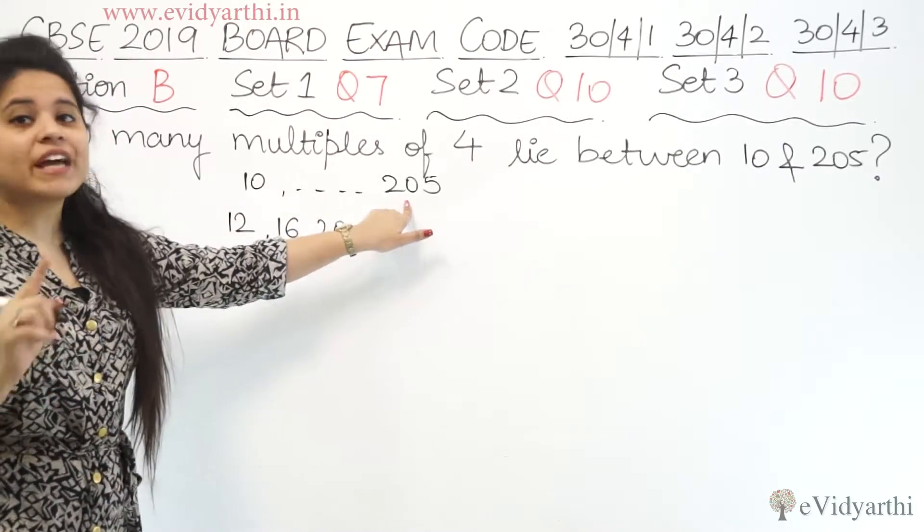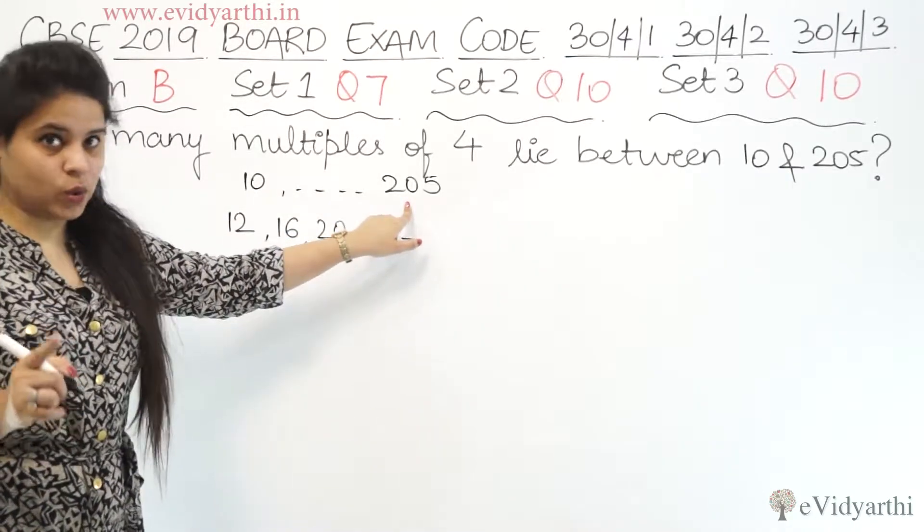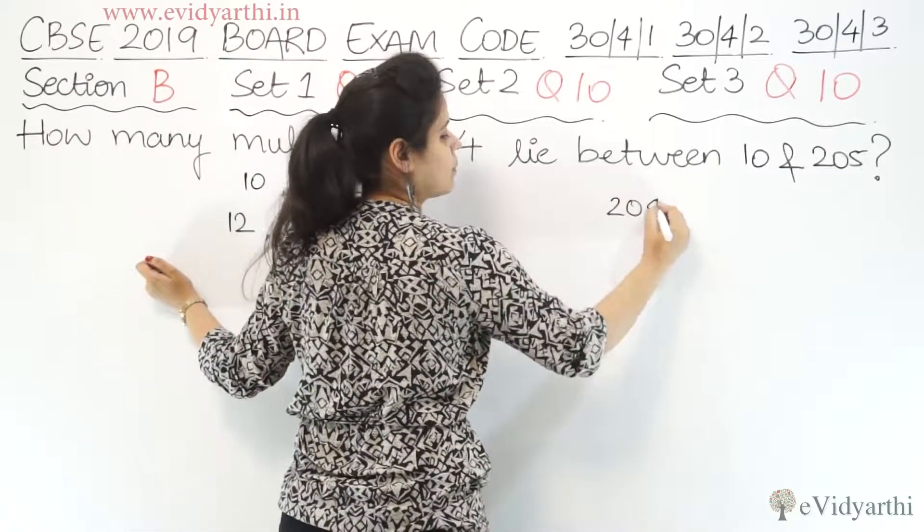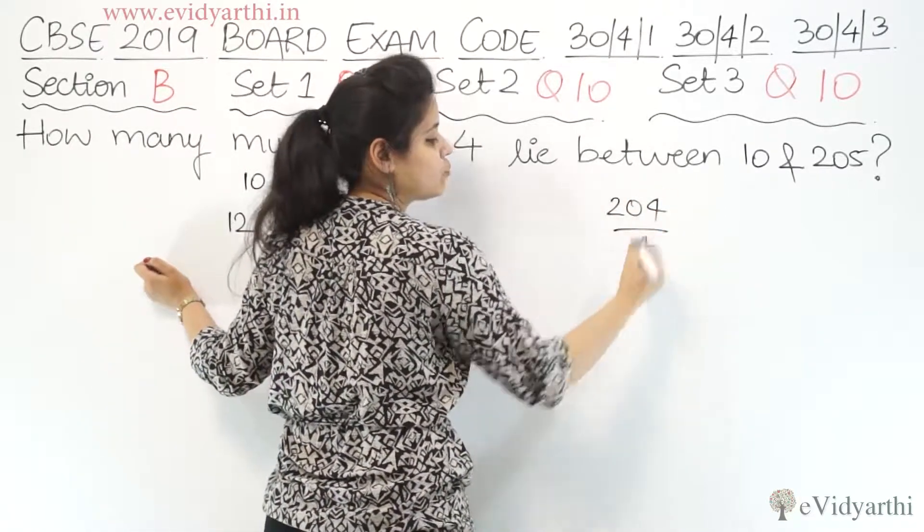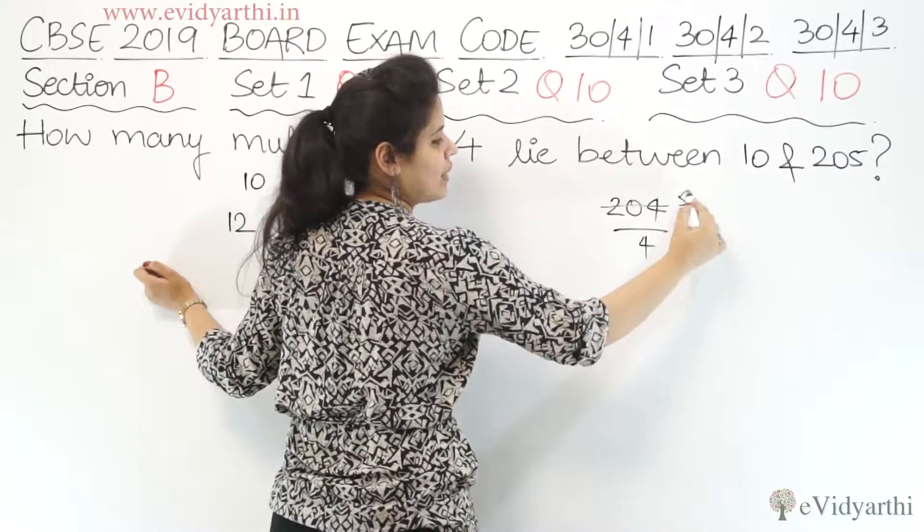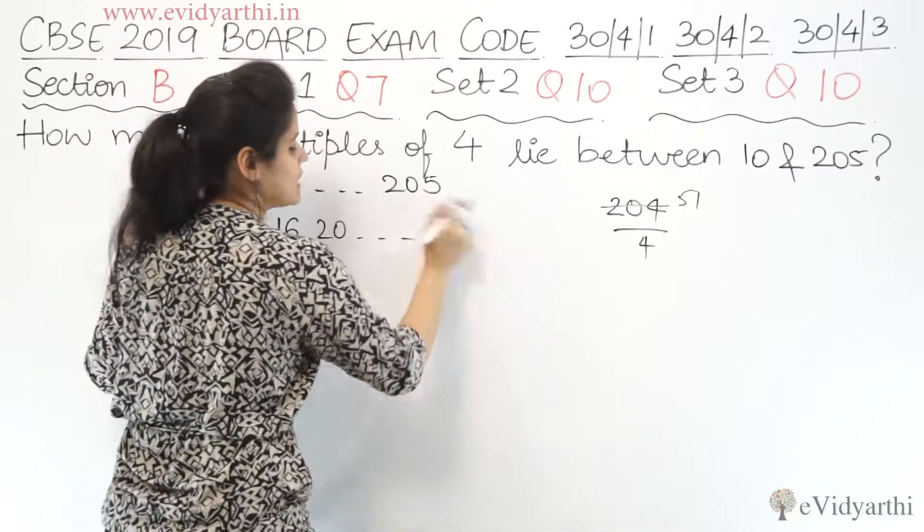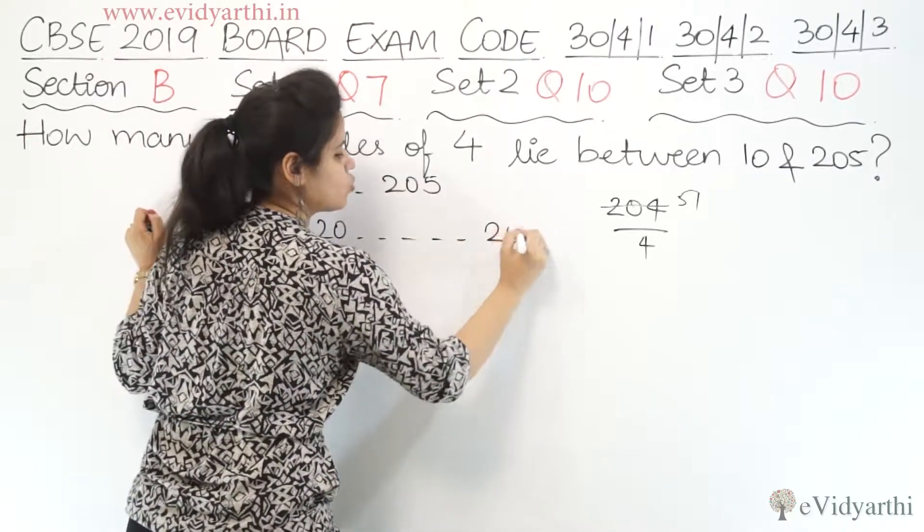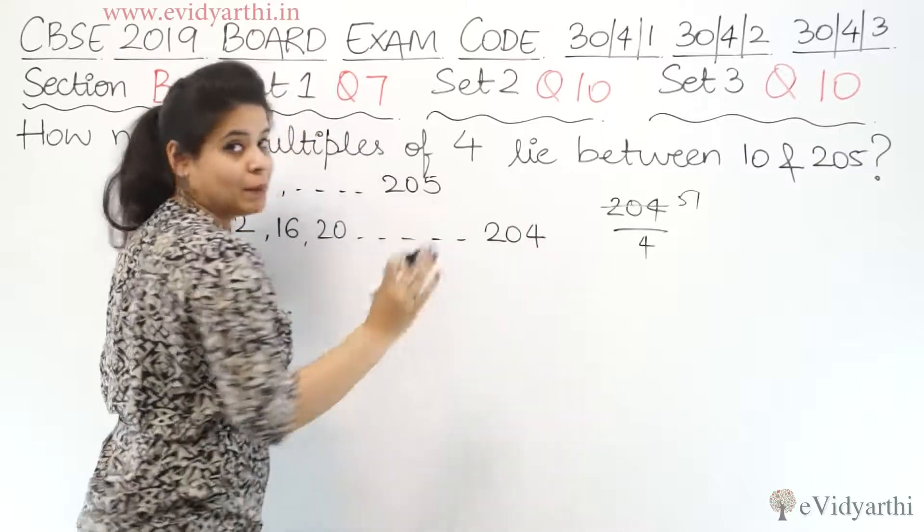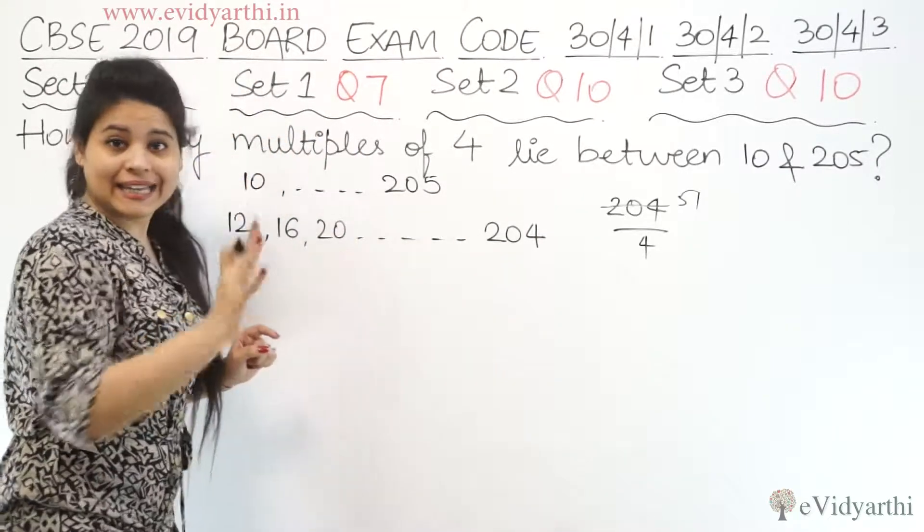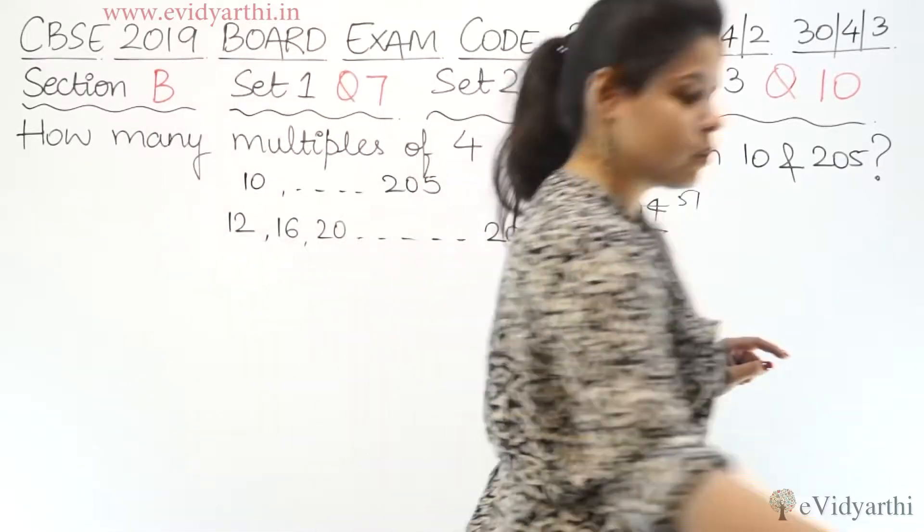Now 205, 205 by 4 is not divided. It will be less than 204. If I talk about 204, I can easily divide it by 4. 4 times 5 is 20, so 4 times 51 is 204. So that means the last number is 204. Now we will see how many terms are in between.